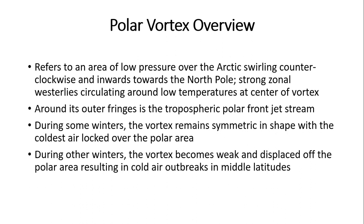Around the vortex's outer fringes typically resides the tropospheric polar front jet stream. Tonight you'll hear me talk about the troposphere and the stratosphere. The troposphere is also known as the weather sphere — where we live at the surface, where all weather occurs. Above the troposphere is the stratosphere. I'll discuss specific warming conditions in the stratosphere that tend to weaken the polar vortex, and coupling — the energy transfer from the troposphere to the stratosphere and back down.